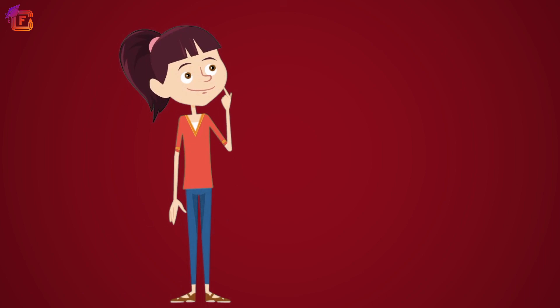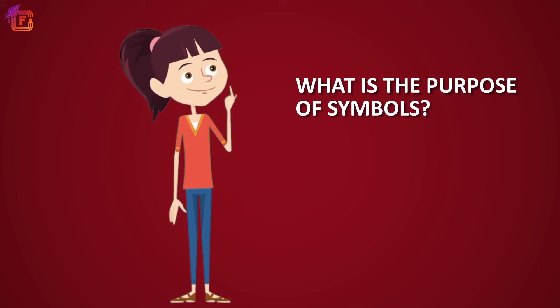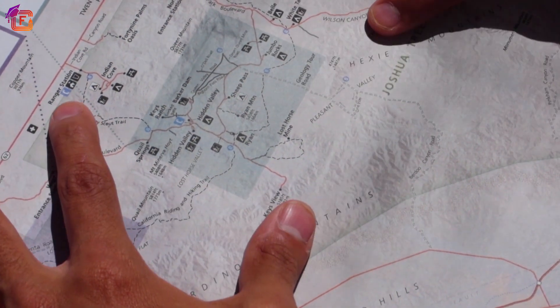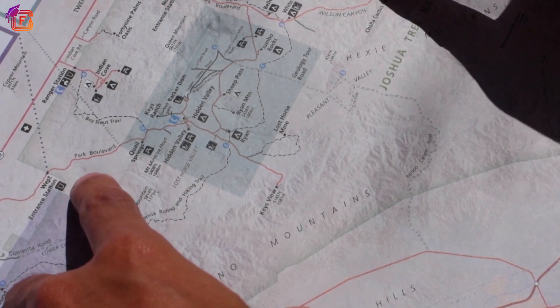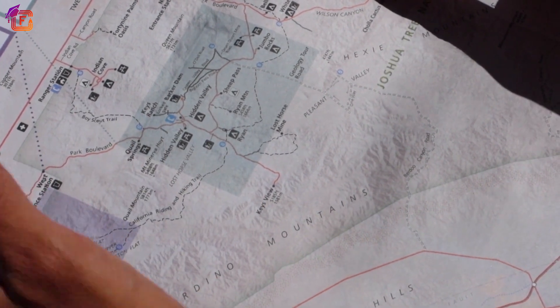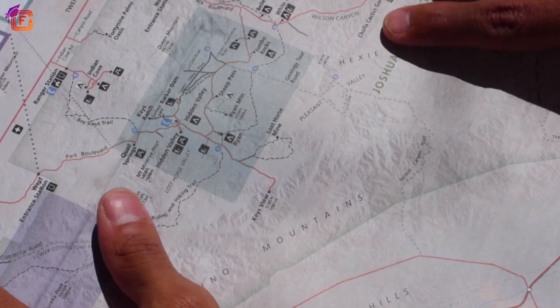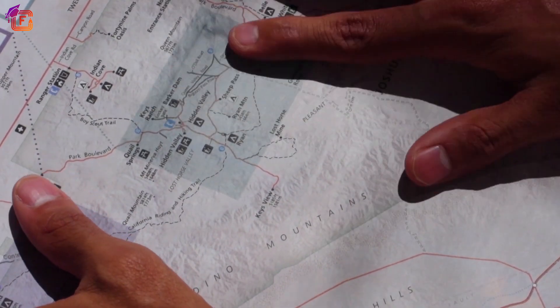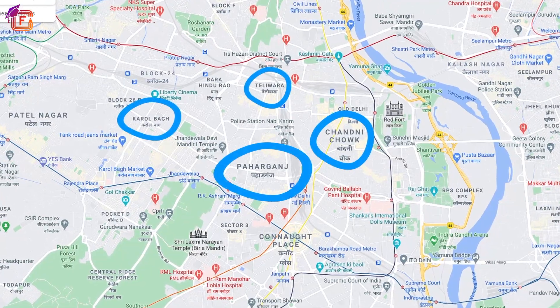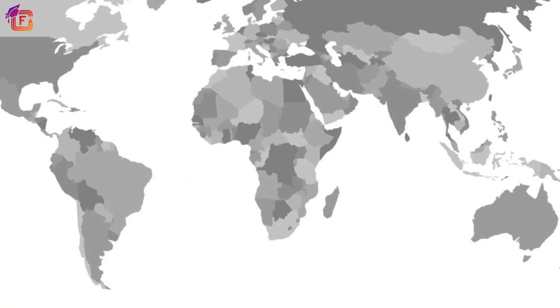Symbol is a significant component of the map as well. It is not possible to represent something or any entity on paper, so symbols are used for this purpose. The symbols include letters, colors, shades, photographs, lines, etc.